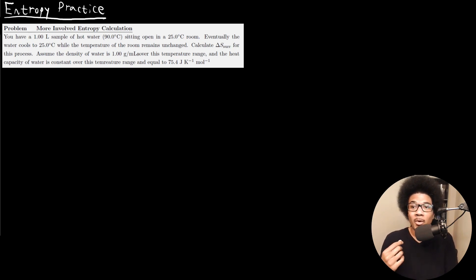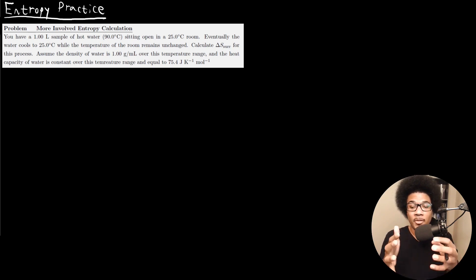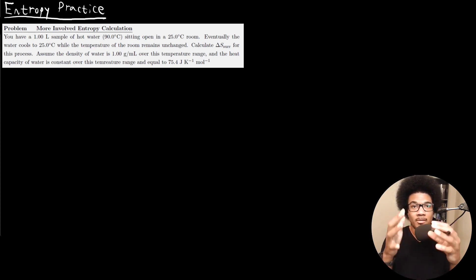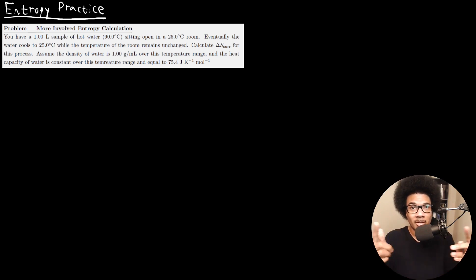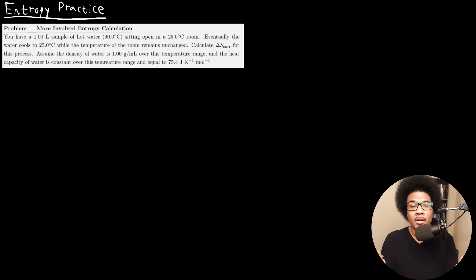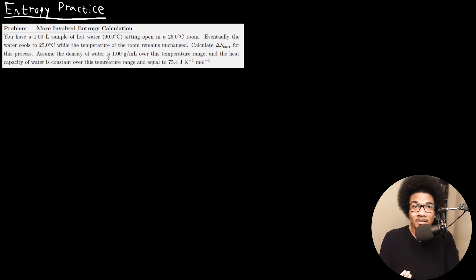We know that we're going to have some heat given off by the water. Think of the physical scenario: you've got a sample of hot water in a room-temperature room, so heat is going to be flowing from the system — the water — to the surroundings, the room. So we're going to have to calculate that heat transfer and then use it to calculate the entropy change in our surroundings.